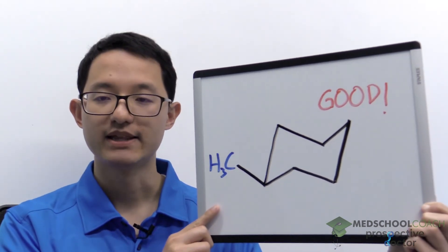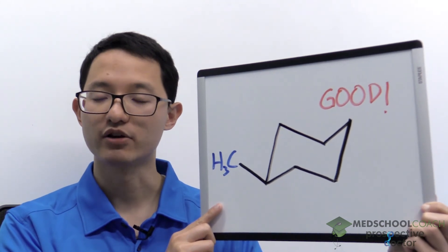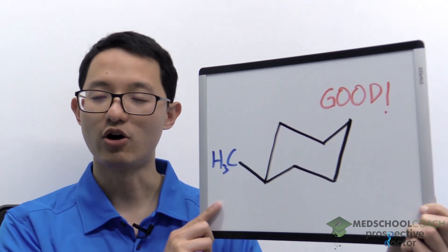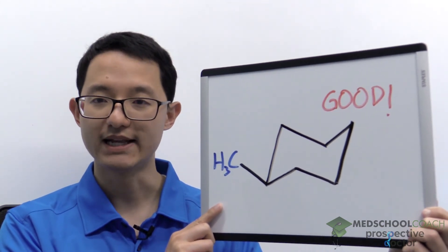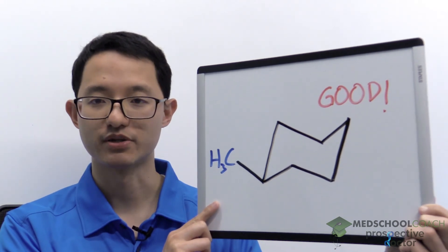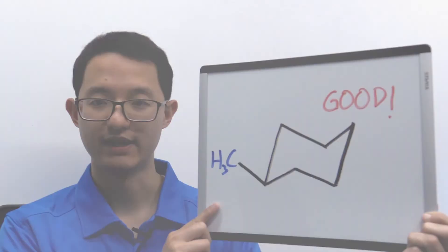On the exam, this means that anytime you're selecting a molecule as an answer choice, you can always eliminate any answer choices where you have a large substituent in the axial position.